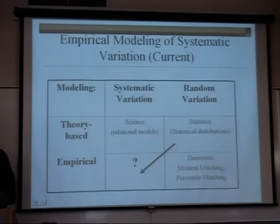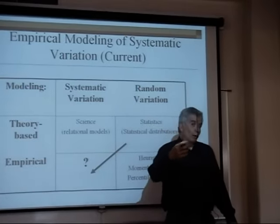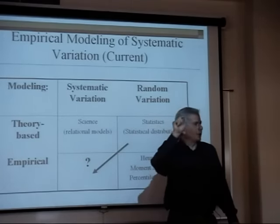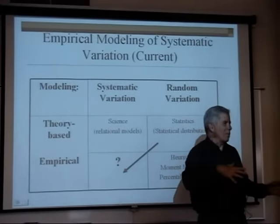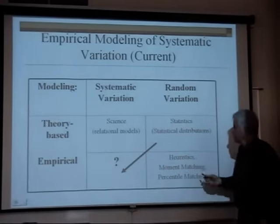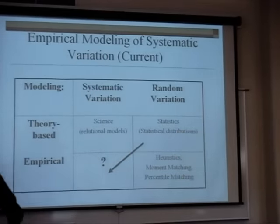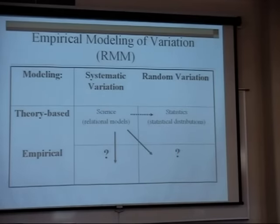With linear regression, we take a normal distribution — a model of random variation — and say the mean is not constant, we can express it as a linear combination of effects, and we have a model of systematic variation. The same happens with GLM — generalized linear models — where we take a family of exponential distributions, a theory-based random variation model, and say the location parameter is a linear combination of effects. What RMM does is a completely different approach: we build a model that is a generalization of current theory-based scientific models.